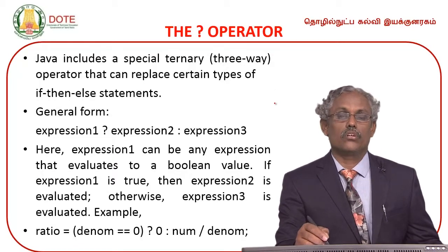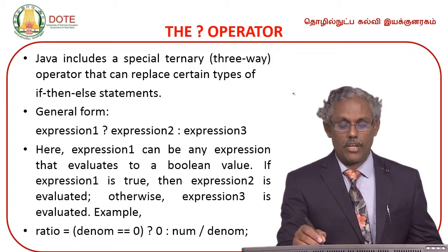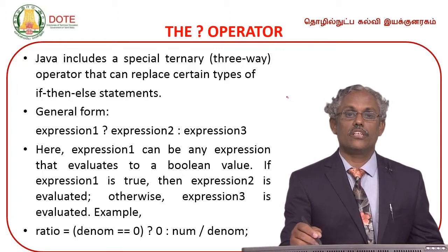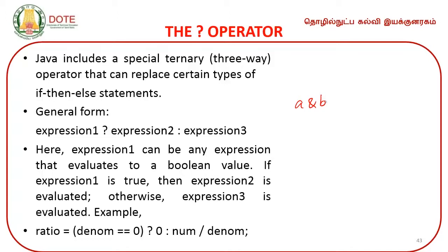Here is a program example: declare integer variables a and b, where a equals 15 and b equals 40. Using System.out.println, display the bitwise operation result.